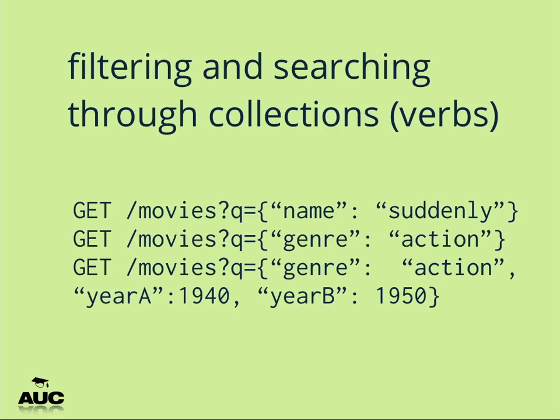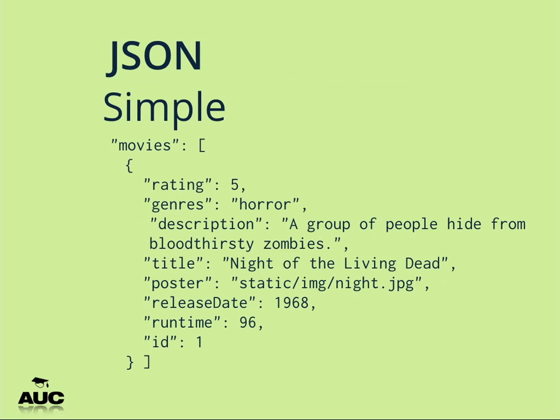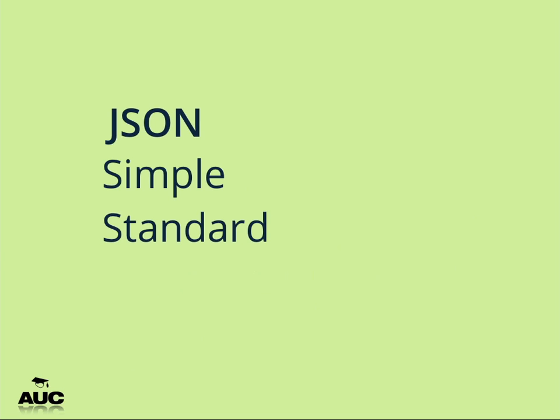So why use JSON? Well, it's simple — much simpler than XML or SOAP. It's directly translatable to a Python dict, it's pretty much a standard, and you can easily read it. It's standard across all sorts of platforms.